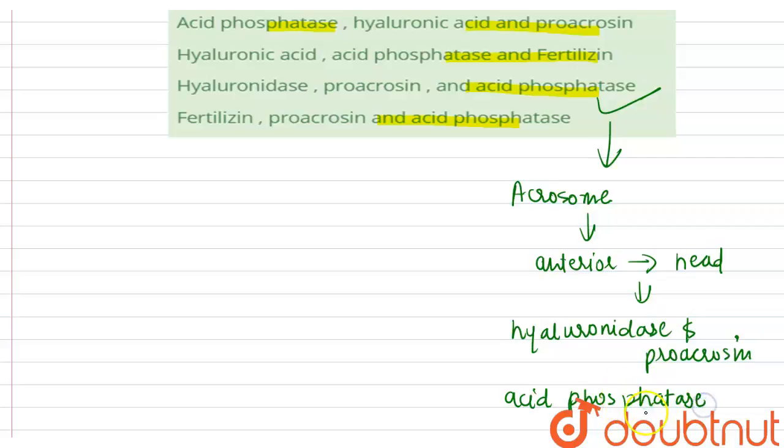Acid phosphatase - the acrosomal reaction does not begin until the sperm comes in contact with the oocyte zona pellucida, and the hyaluronidase enzyme destroys the hyaluronic acid of the ovum.